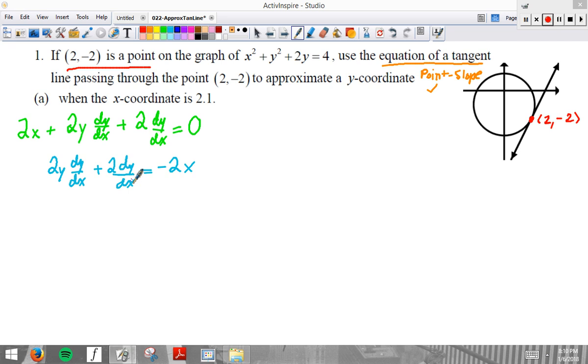I subtracted 2x from both sides. A lot of people forget that what you need to do here is factor. So, we're going to factor out dy dx. A lot of people do this silly: divide that by 2y, divide that by 2, divide that by 2y plus 2. That's bad. It looks bad. It's illegal.